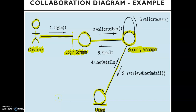Now let's talk about the messages. To display a message we use an arrow line along with numbers — numbering is required. When the customer talks to the login screen, the first message is that the customer wants to login. After this, the login screen fetches all the details and sends them to the security manager to validate the user — that is the second message.